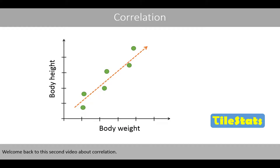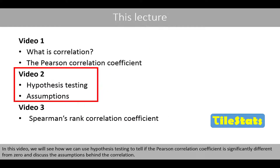Welcome back to this second video about correlation. In this video, we'll see how we can use hypothesis testing to tell if the Pearson correlation coefficient is significantly different from zero, and discuss the assumptions behind the correlation.